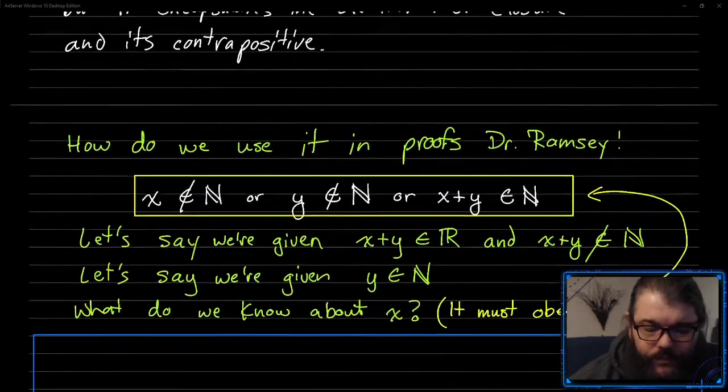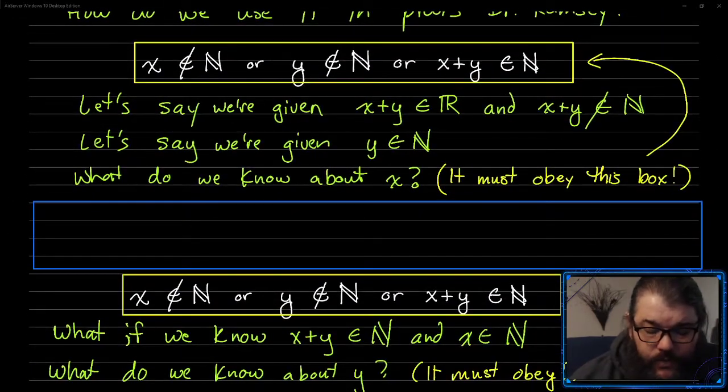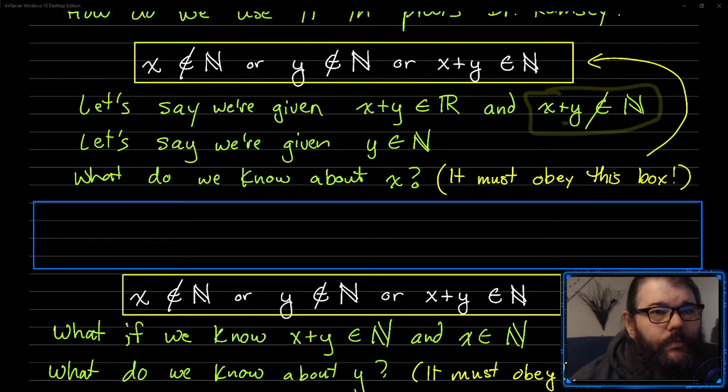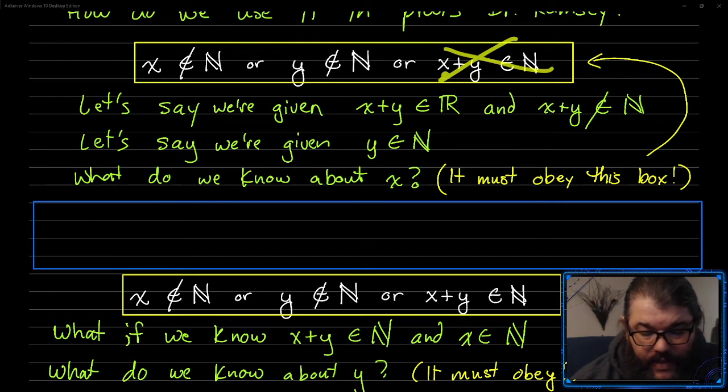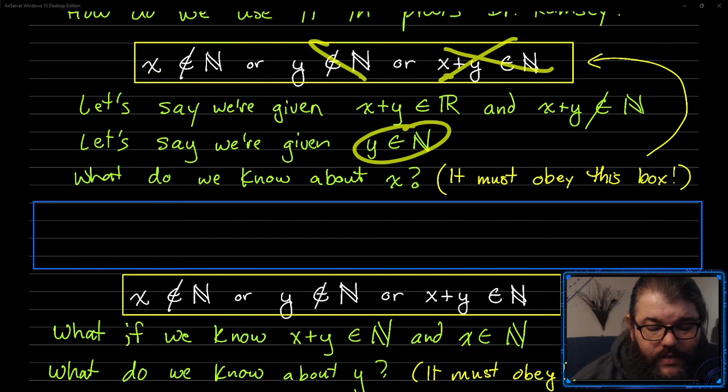Alright, so how do we use it in proofs? So let's say we're given that x plus y is not a natural number. Maybe we know this, right? So we know that this is not true. And then let's say that we know that y is a natural number. In that case, we know that this is not true.